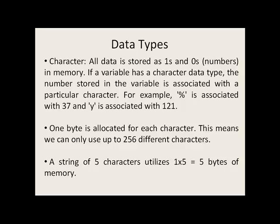With character variables, we should keep in mind that all data in the computer is stored as ones and zeros, or numbers. If a variable has a character data type, the number stored in memory is associated with a particular character. For example, the percent character is associated with the number 37, and the lowercase y character is associated with 121. One byte is allocated for each character, which means we can only use up to 256 different characters. If you have a string of characters, each character is allocated one byte of memory, so a string of five characters would require five bytes.